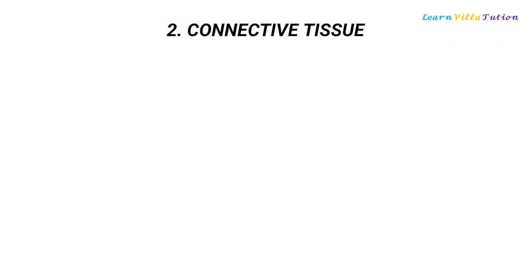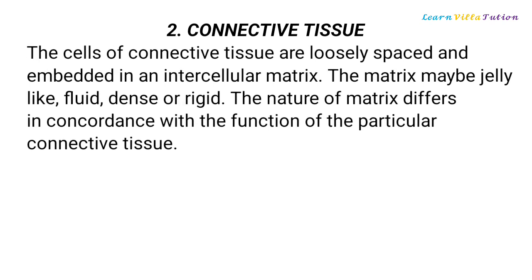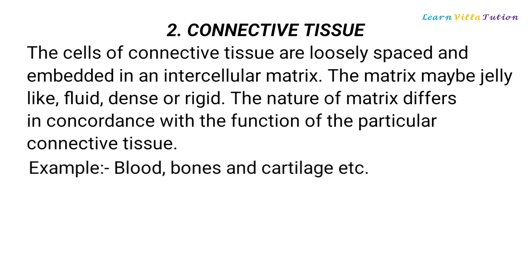Connective Tissue: the cells of connective tissue are loosely spaced and embedded in an intercellular matrix. The matrix may be jelly-like, fluid, dense or rigid. The nature of matrix differs in concordance with the function of the particular connective tissue. Examples include Blood, Bones, and Cartilage.